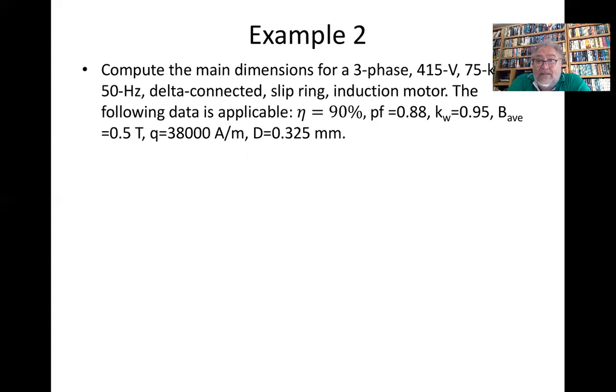The following data is applicable: efficiency is 90%, power factor is 0.88, k_w is 0.95, the average flux density is 0.5 tesla, Q is 38 kiloampere per meter, and the diameter is 0.325 meters.